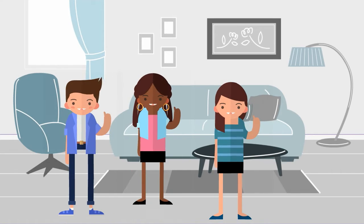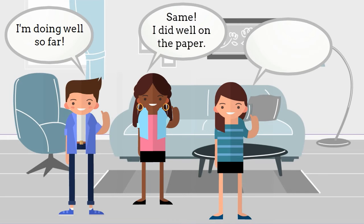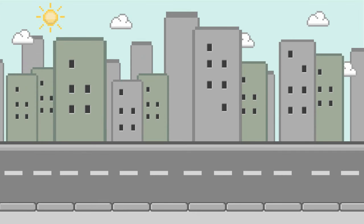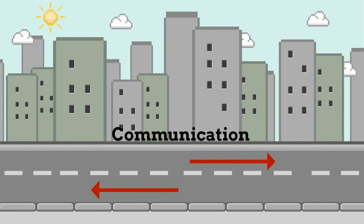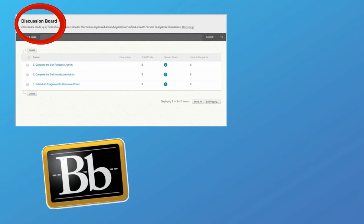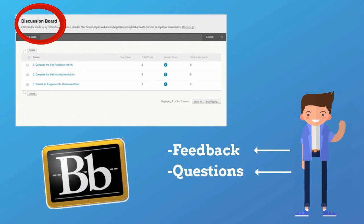Providing that detailed feedback via the comments helps students to know how they're doing in the class, what information they do understand, and what they might need additional help with. Of course, communication must remain a two-way street. In order for a good relationship to be maintained, students will also have to give you some feedback. Open discussion forums, which can be created through Blackboard, are a great way to obtain student feedback, questions, and comments from students who are currently enrolled in your course.